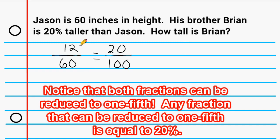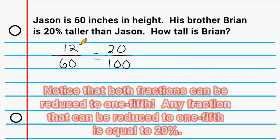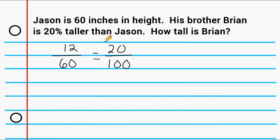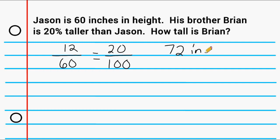Now that we know 12 inches is 20% of 60, and Brian is 20% taller than Jason, instead of saying 20% taller than Jason, we can say 12 inches taller than Jason. So we take this 12 inches and add it to 60. And 60 plus 12 is 72, so Brian is 72 inches tall.